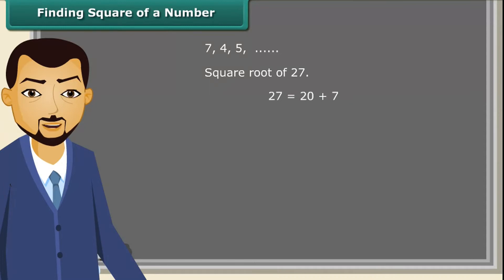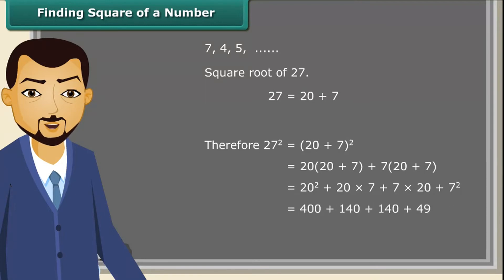We know 27 is a sum of 20 and 7. Therefore, a square of 27 is equal to 20 plus 7 whole square, which is equal to 20 into 20 plus 7 plus 7 into 20 plus 7, which is equal to 20 square plus 20 into 7 plus 7 into 20 plus 7 square, which is equal to 400 plus 140 plus 140 plus 49, which is equal to 729.